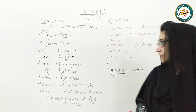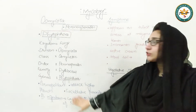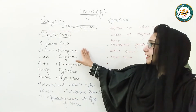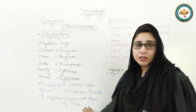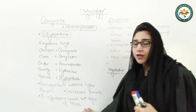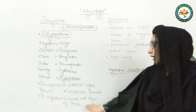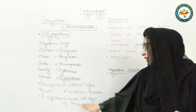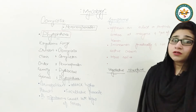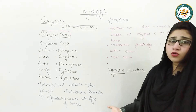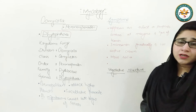Phytophthora infestans is a species called the Irish Potato Famine in the 19th century. In the 19th century it caused late blight of potatoes. Potatoes rotted.